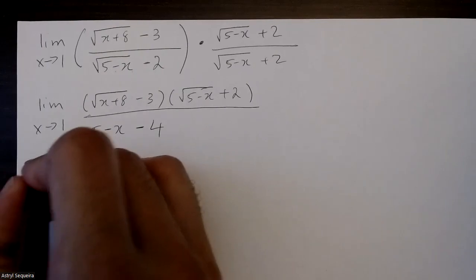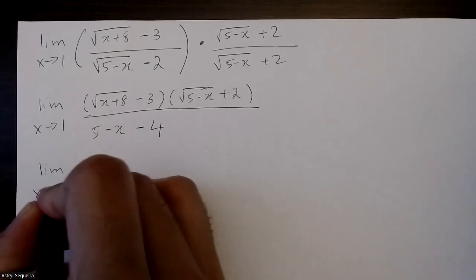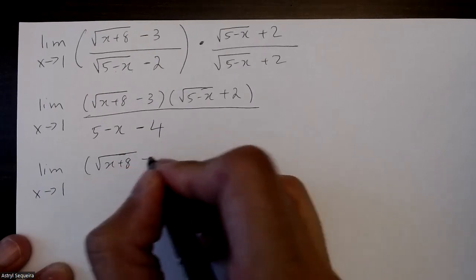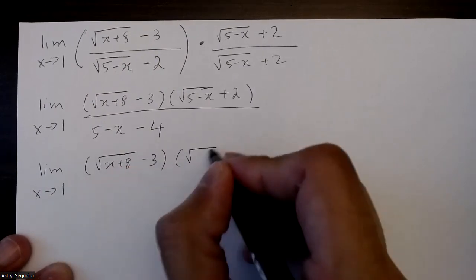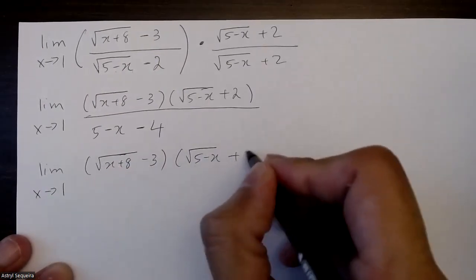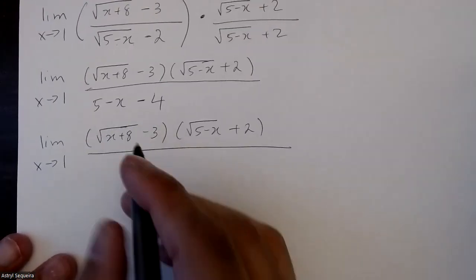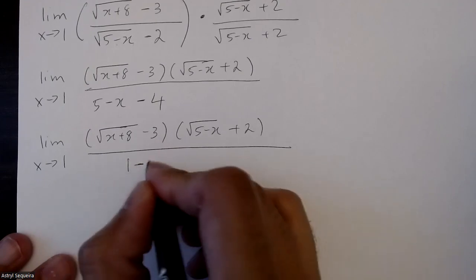I'm going to simplify this a bit. The top stays exactly the same. And I can combine like terms in the bottom. So this is just going to be 1 minus x.